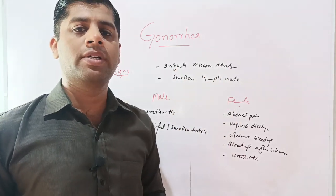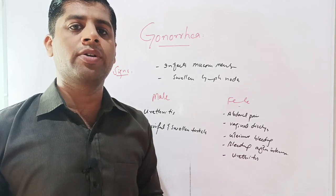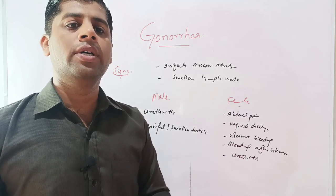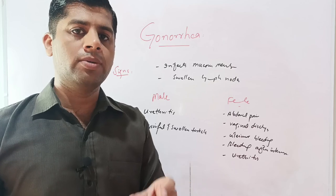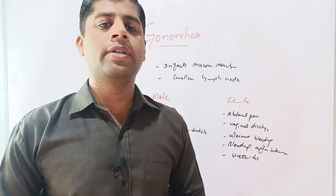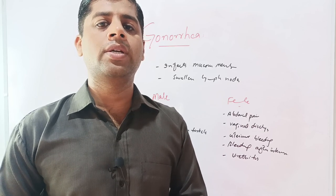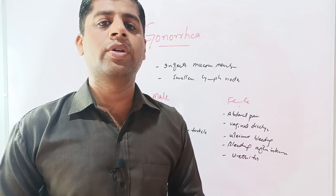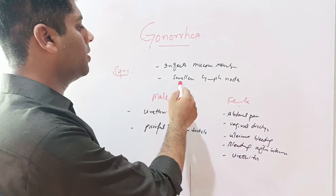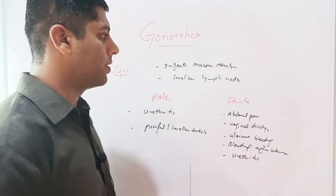When the Neisseria gonorrhea bacteria invade the mucous membrane of the urinary tract, reproductive tract, or oral cavity, it replicates in the mucous membrane and causes inflammation, itching, swelling, and painful conditions along with pus formation. The local lymph nodes are also swollen, called lymphadenitis.